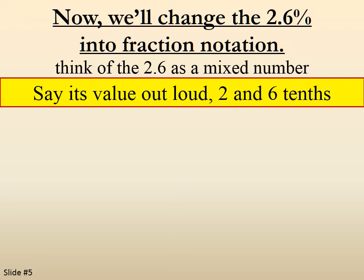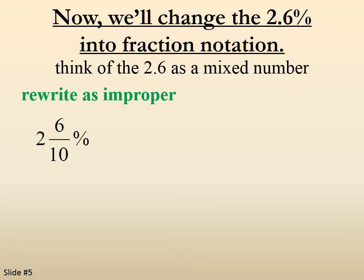2 and 6 tenths. Now we're going to rewrite as an improper fraction. So 2 times 10 is 20, plus the 6 makes 26 over 10. All we've done is turn the 2.6 into 26 over 10.